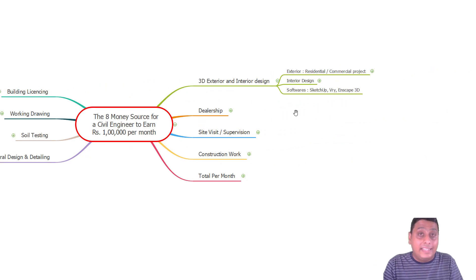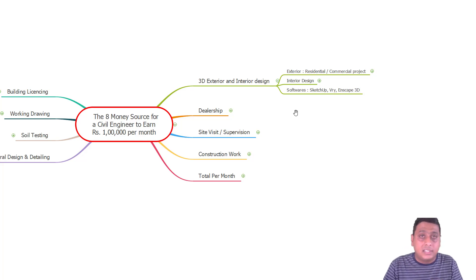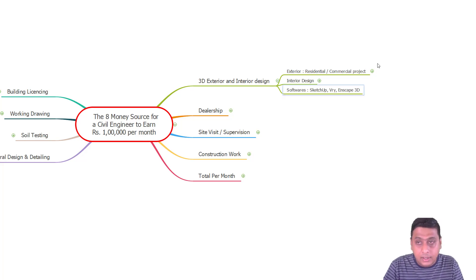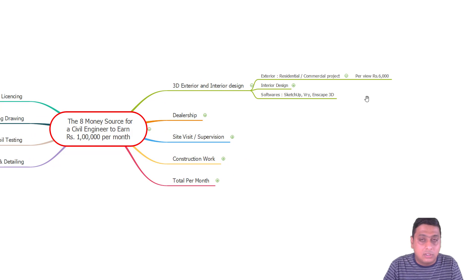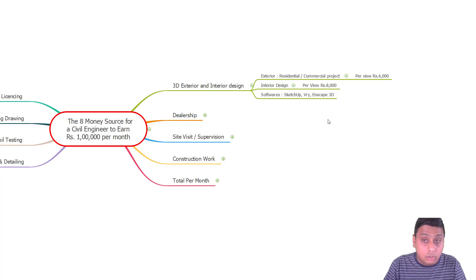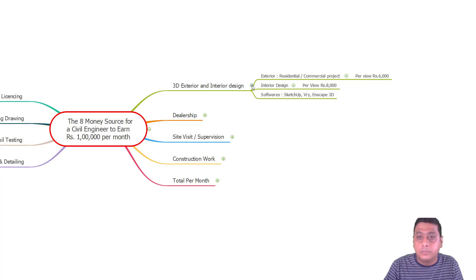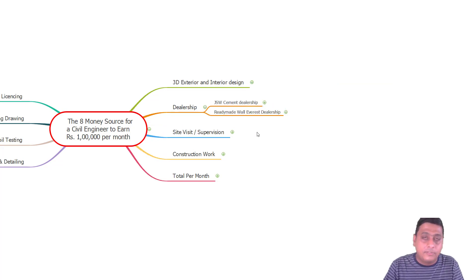If you are good at 3D exterior or interior design, we do basic 3D rendering — not at the level of architects, but for common clients with limited budgets. For exterior views we charge 6000 rupees per view, and for interior design 8000 rupees per view. Software used includes SketchUp, V-Ray, and Inkscape 3D for rendering. If I get one project per month with one exterior and one interior view, that's 14,000 rupees per month.